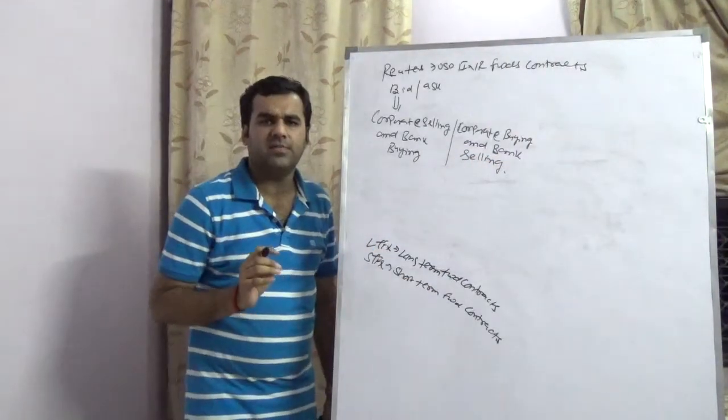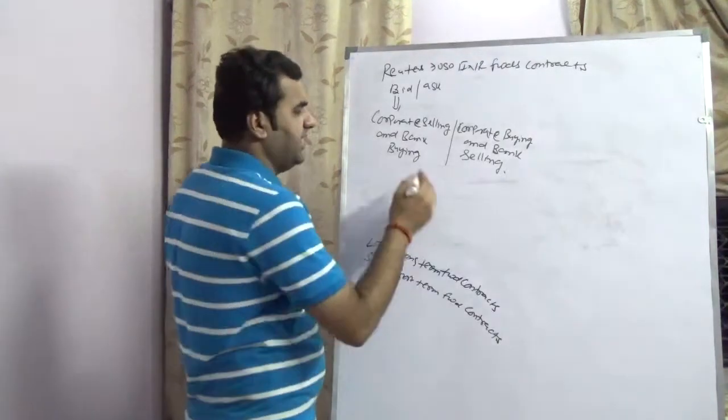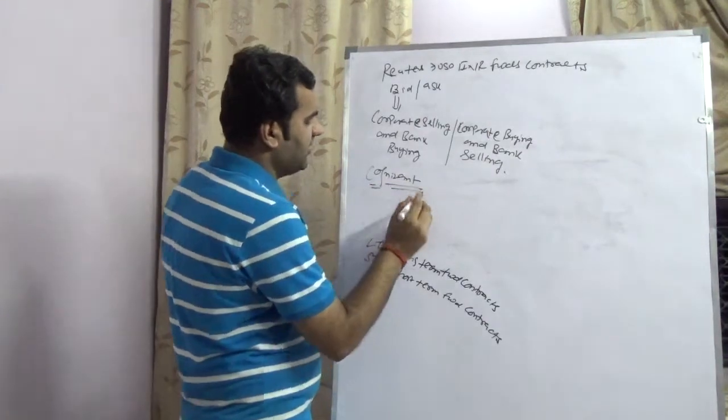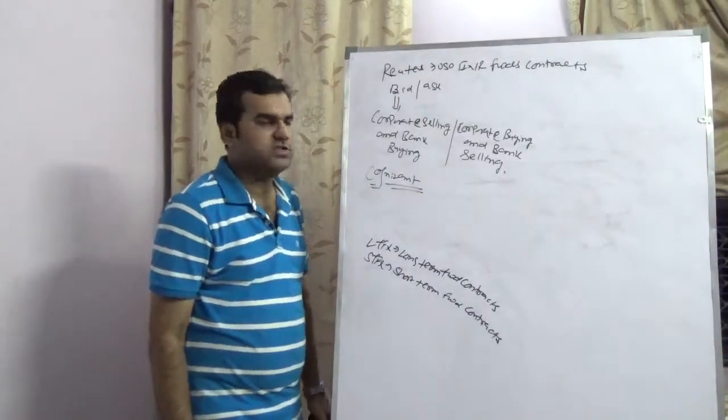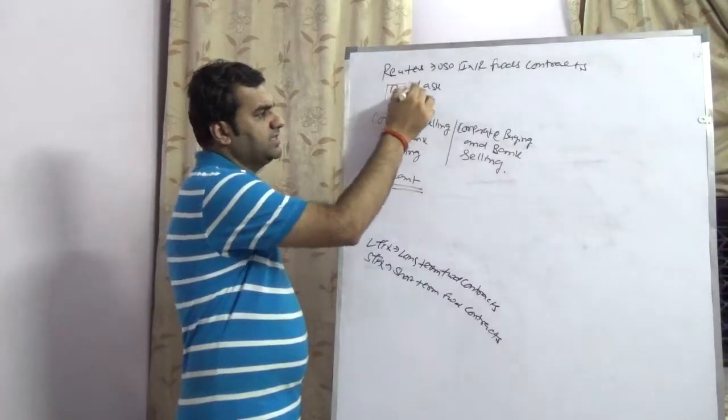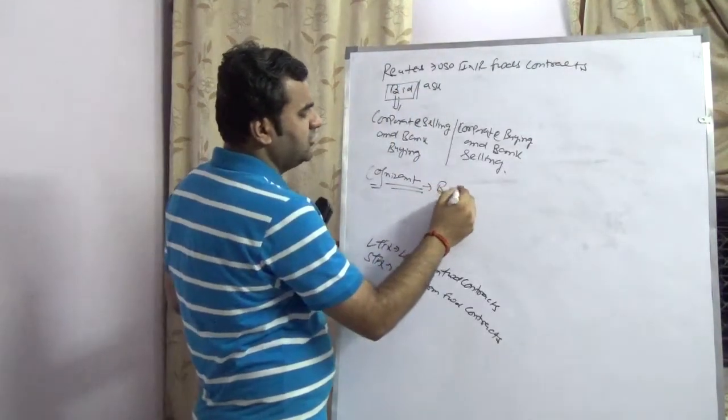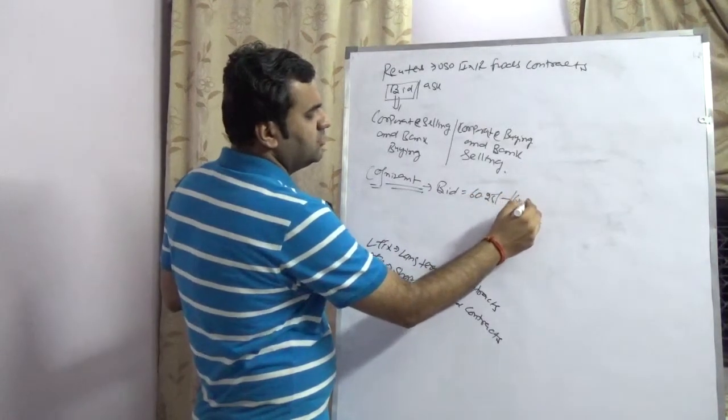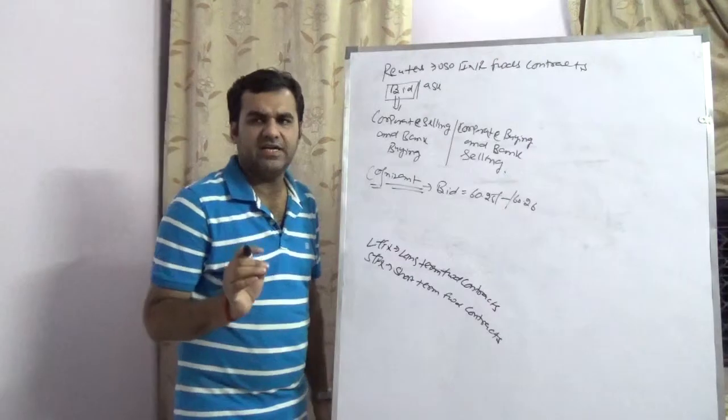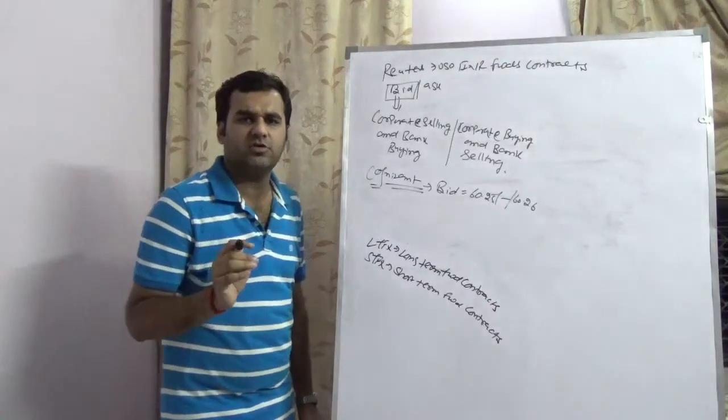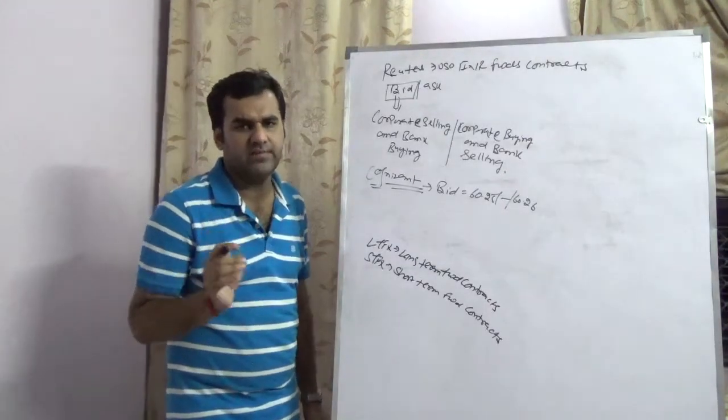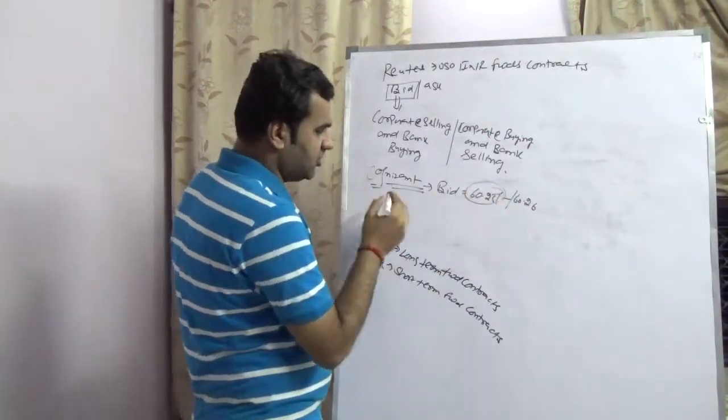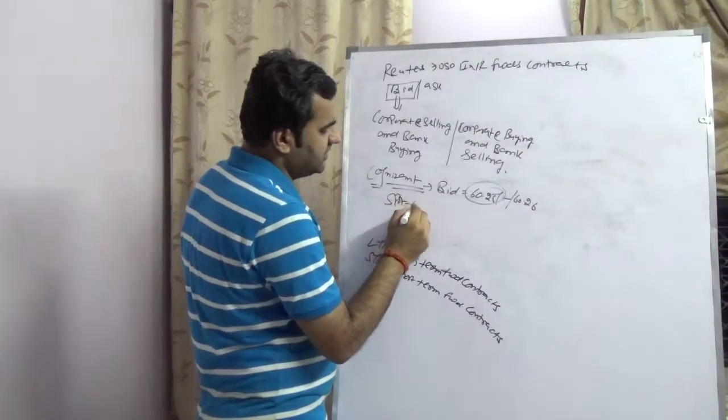So today we are going to consider an example of an exporter which we are assuming will be Cognizant. So if Cognizant would have to hedge via a forward contract, Cognizant would see the bid rate because they are a seller. So Cognizant will see a bid rate and assuming the bid rate is 60.25 to 60.26, it means 60.25 is the selling rate at which Cognizant can sell. 60.26 is the buying rate at which Cognizant can buy. So Cognizant being an exporter, Cognizant will do 60.25. So Cognizant would lock the spot which is 60.25.